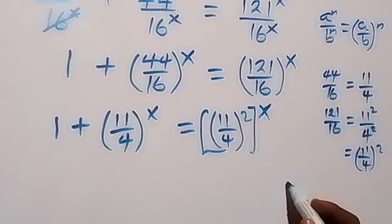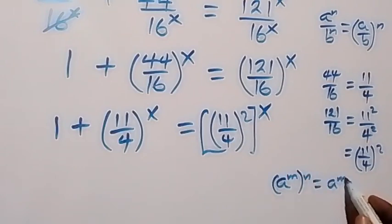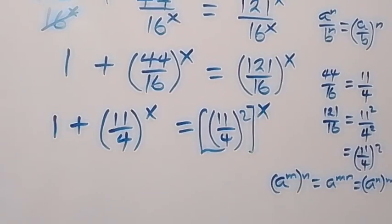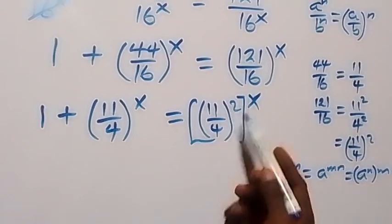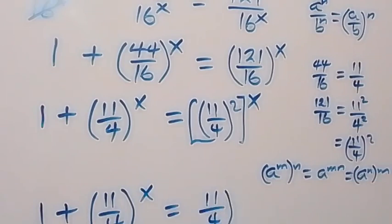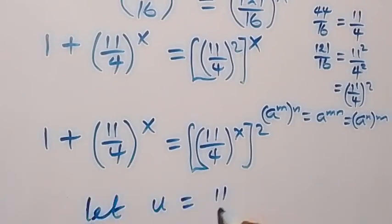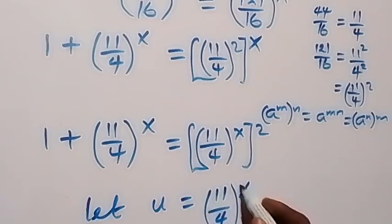Applying the law of indices — a^m raised to power n equals a^(mn) — we can interchange the powers. This gives us 1 plus (11/4)^x equals ((11/4)^x) squared. Now let u equal (11/4)^x.